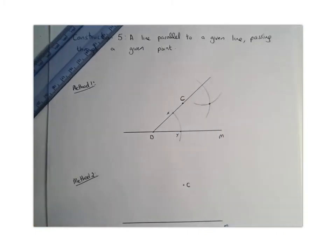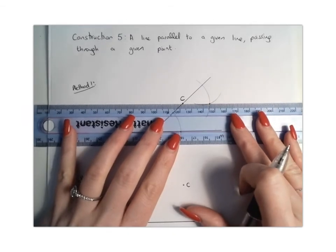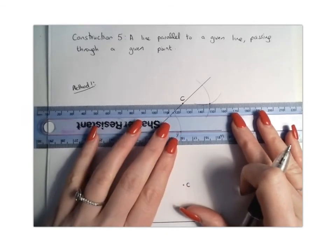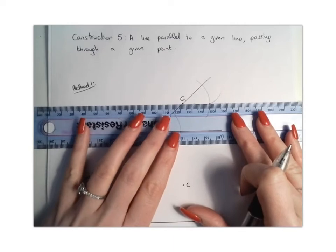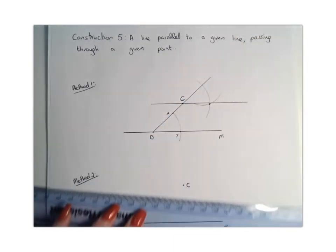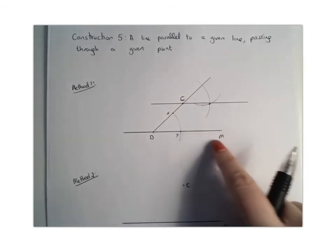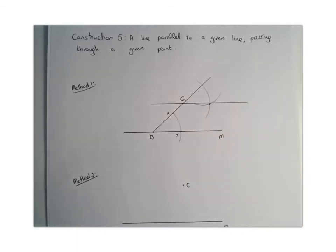And then using our ruler, we are going to join up the point that we just found with the point C that we started off with, and we're going to draw a straight line between them. And if we've done that properly, what we should notice is that the line that we've just drawn is parallel to our line M. So that is method number one.